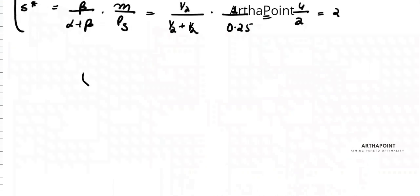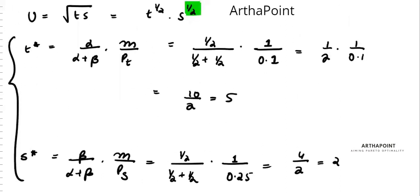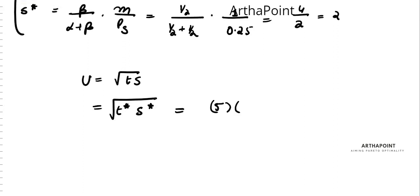So what is the utility he receives in part a? Utility is given by root ps, right? So I already know that t star into s star we calculated in the last video, that is 5 into 2. Root 5 into 2 will be root 10. So this is the utility that he's getting.